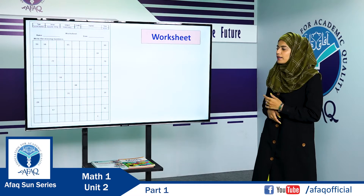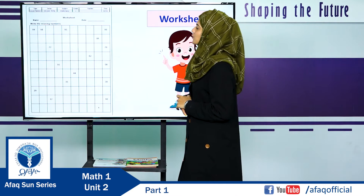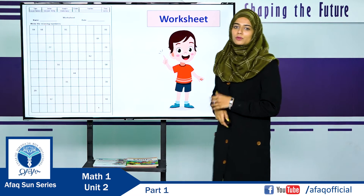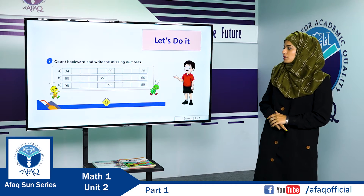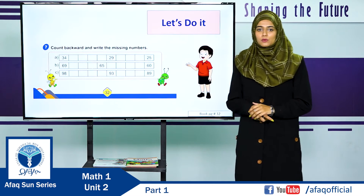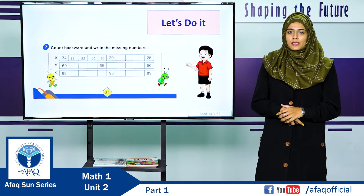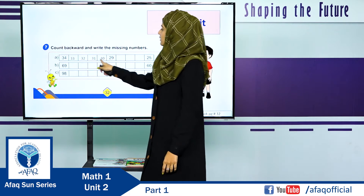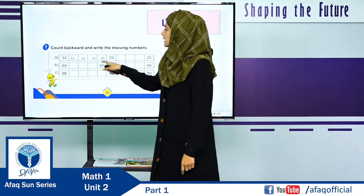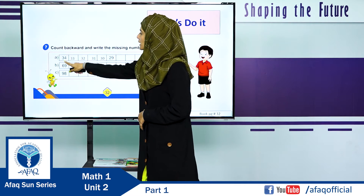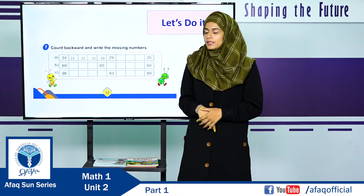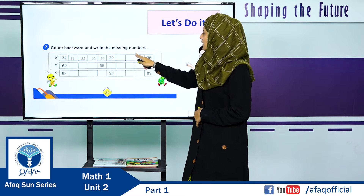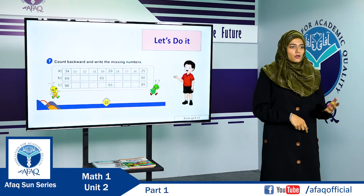Here is the worksheet for the student. The question is: write the missing numbers. Students, you have to write the backward counting in the rectangles on page number 32. What is backward counting? It's a reverse counting, like three, two, one. Let's solve question number one. We have missing rectangles to fill in backward counting: before 34 comes 33, then 32, 31, 30, 29, 28, 27, 26, 25. I hope you understood the concept of backward counting.